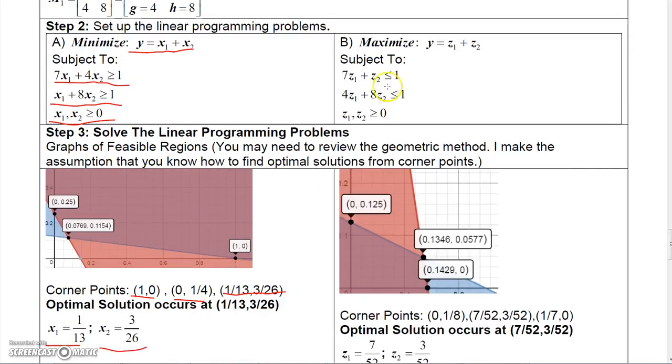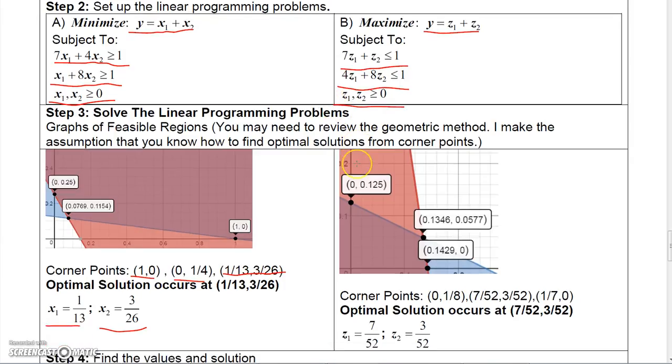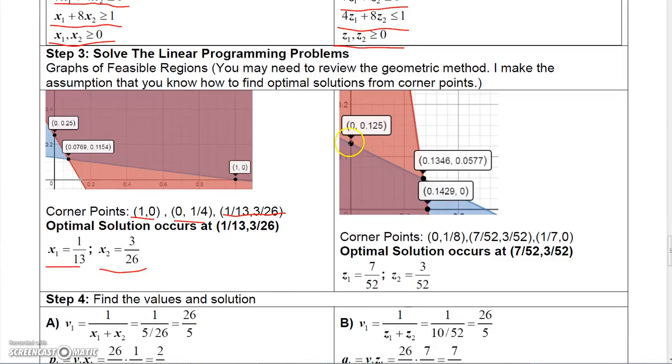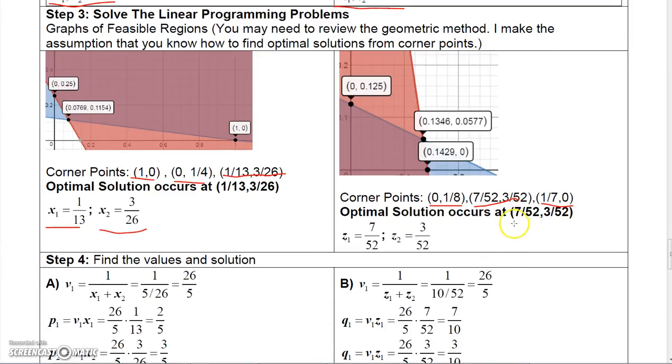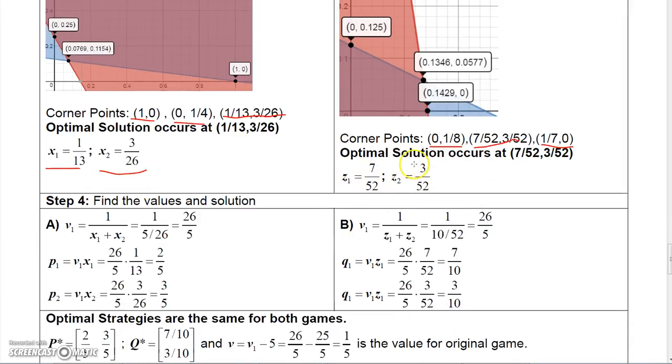On the other one, you're maximizing this function, subject to 7Z1 plus Z2 is less than or equal to 1, and Z1 plus 8Z2 is less than or equal to 1, and Z1 and Z2 greater than or equal to 0. If you solve that graphically, you'll get three corner points here. Corner points at 0, 1 8th, 7 52 and 3 52, and 1 7th 0. The optimal solution occurs at 7 52 and 3 52. So Z1 is 7 over 52, Z2 is 3 over 52. V1 would be 1 over 10 over 52, which is going to be the same as it was over here.